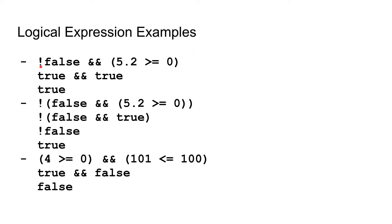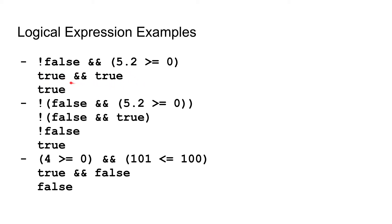Not false gets changed to true, and then 5.2 is greater than or equal to zero, so that is also true. We have true and true, and we know from our truth table that true and true gives us true.